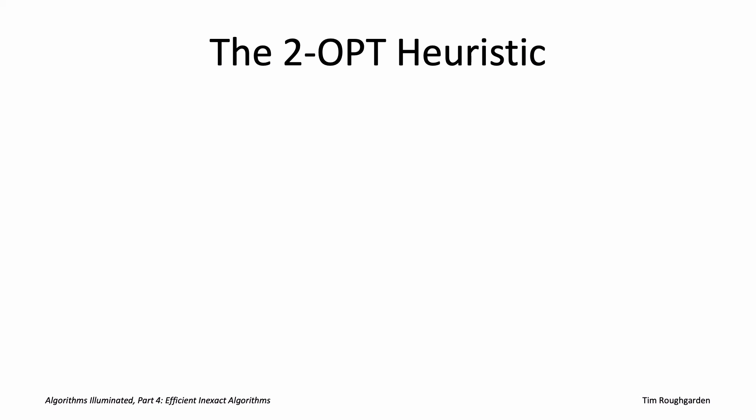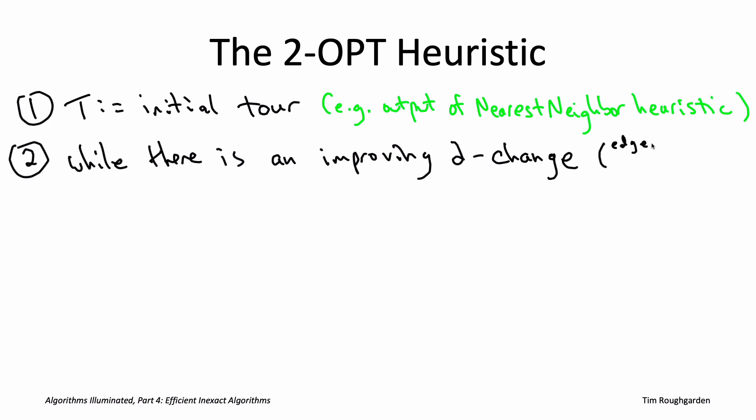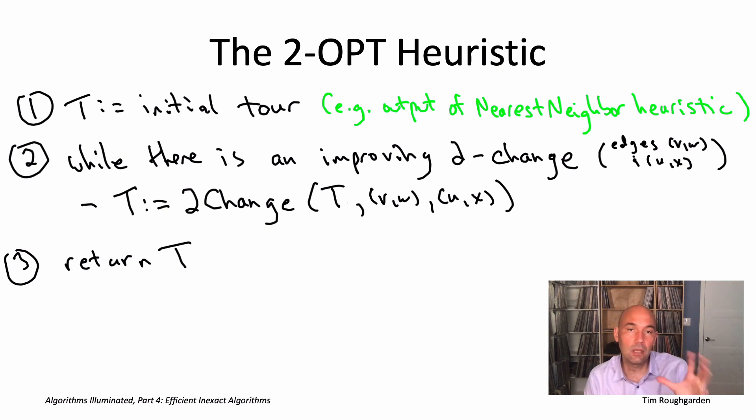Now you can probably guess what the 2-OPT heuristic for the TSP is. You initialize it with an arbitrary tour - for example, maybe the output of the nearest neighbor greedy heuristic. Then you keep greedily improving the tour further as long as you can, where each improvement makes the minimal modification necessary to get a new tour. That is, you make a 2-change, and the 2-change should be improving, meaning the cost of the edges you remove should exceed the cost of the edges you stick in. You keep doing that for as long as you can. When there's no more improving 2-changes, you stop and return that as your final tour. In the pseudocode, by 2-change I mean the subroutine that takes as input a tour and two edges of that tour that share no endpoints, and then executes the corresponding 2-change. It removes the given edges V,W and U,X, and adds the pair of edges that gives you a new tour - pairing up V either with U or with X, and then W with the other one, whichever gives you a new tour.